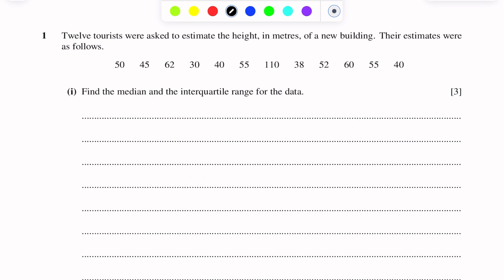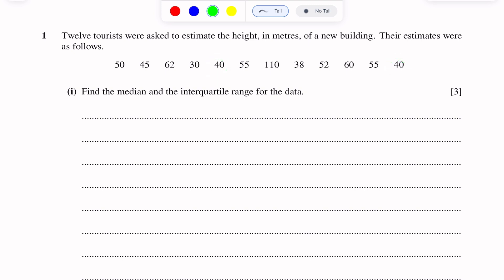Arranging the data in ascending order: the smallest reading is 30, then 38, then 40, again 40, 45, 50, 50, 52, 55, 55, 60, 62, and 110.